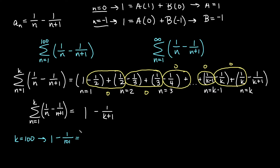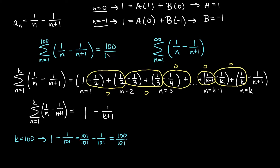Getting a common denominator: 101 over 101 minus 1 over 101 gives us 100 over 101. So the sum of the first 100 terms is 100 divided by 101.